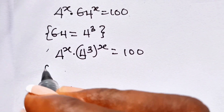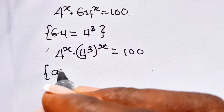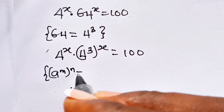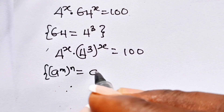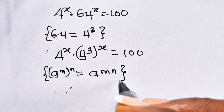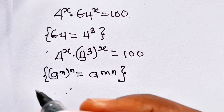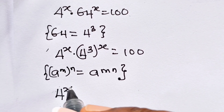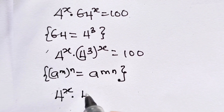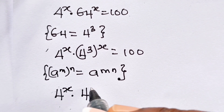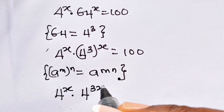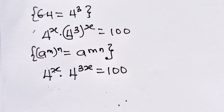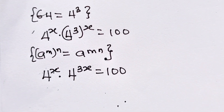Now remember that a to the power of m, raised to the power of m, is equal to a to the power of m times m. Therefore, we can write this as 4 to the power of x multiplied by 4 to the power of 3x, equal to 100.